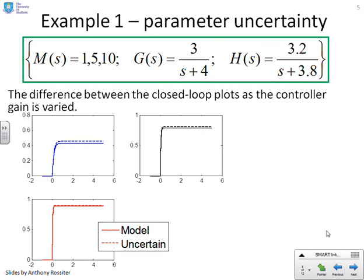So some examples then. You'll see what I've done here is I've allowed the controller to take five different values. One, five, and ten. So let's put that in the boxes here. This figure, M equals one. This figure, M equals five. And this figure, M equals ten. Now, what do you notice? I've plotted the closed loop response you get if you just have the model, and the closed loop response you get if you perturb the model a bit.